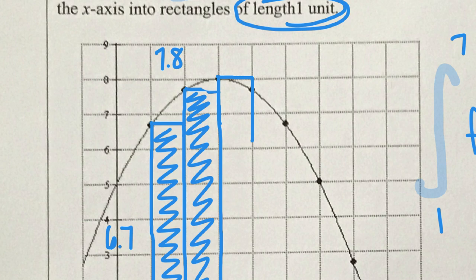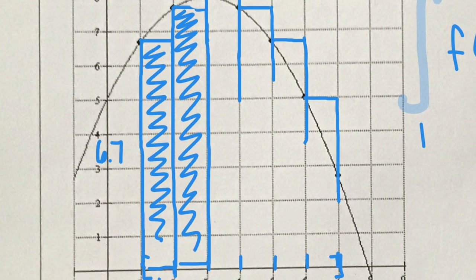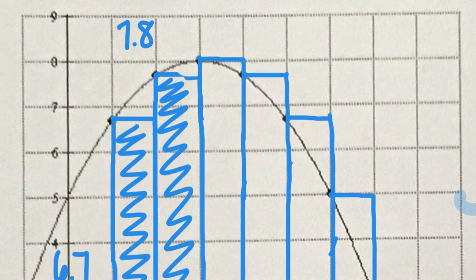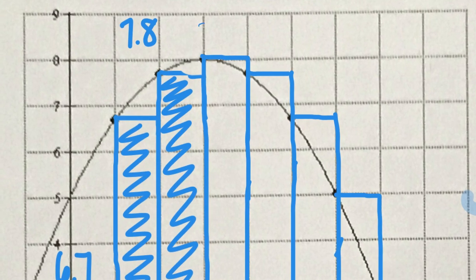Our next rectangle comes up to this y-value — now we've gone a little bit above the curve, so our area will be slightly over the actual value. We continue using left endpoints until rectangles encompass our entire interval from 1 to 7. Estimating all the y-values: the middle one is exactly 8, then by symmetry 7.8 again, then 6.7, then 5 for the last rectangle.